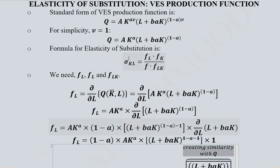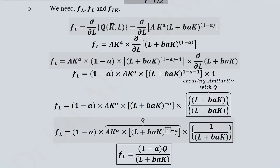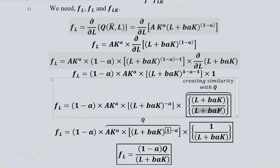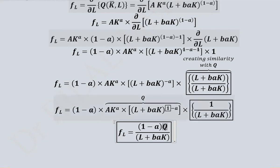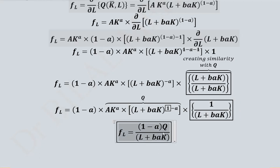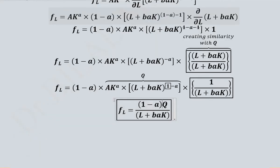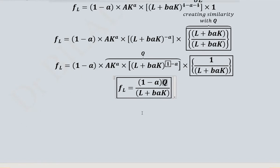This introduced term creates similarity with Q so that it gets cancelled in the formula. The upper term is combined and the remaining denominator term stays as is. The bracketed expression is now equal to Q — the original production function — so we substitute Q. The remaining factor of 1 minus A stays, and the denominator gives capital K. This is the final form of FL, the marginal product of labor.